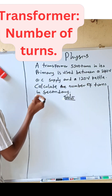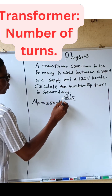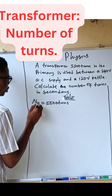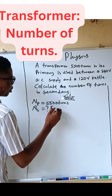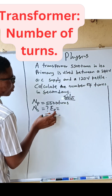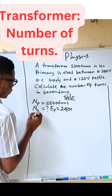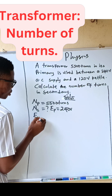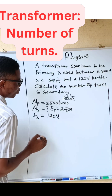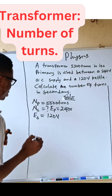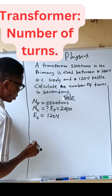The number of turns in the primary side, Np, is five thousand five hundred turns. The number of turns in the secondary side, Ns, is what we are looking for. The voltage in the primary side of the transformer, Vp, is 240 volts, and the voltage in the secondary side, Vs, is 120 volts. We are looking for Ns.